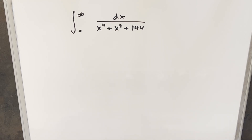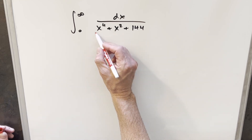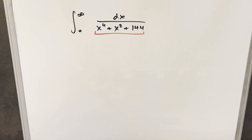We have another interesting integral on the board. We've got the integral from 0 to infinity of 1 over x to the 4th plus x squared plus 144, dx. I was kind of liking this one because it was similar to a few integrals I've done recently with a couple little twists to it. For my first step, I want to look at this denominator and try to factor it some way.